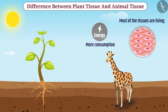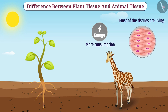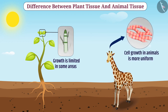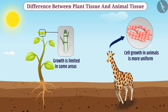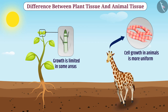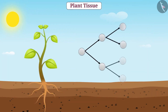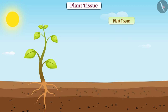Due to this, most of the tissues of animals are living. Talking about plant tissues, some plant tissues keep dividing throughout their life, so their growth is limited to some areas, whereas cell growth in animals is more uniform. Therefore, plants and animals have different types of tissues. Now, let us understand plant tissue, meristem, in detail.